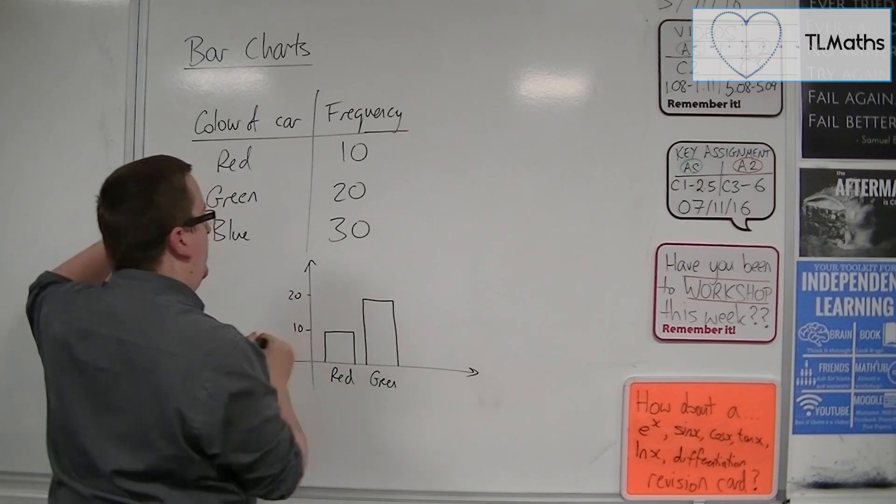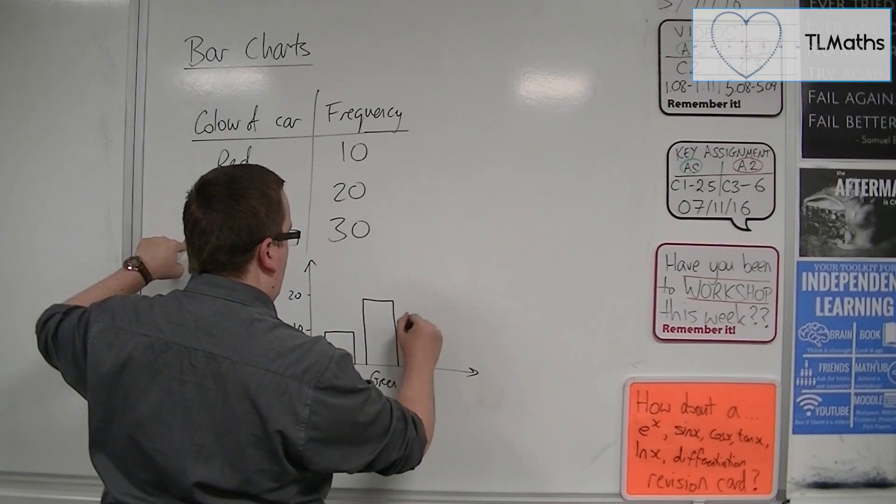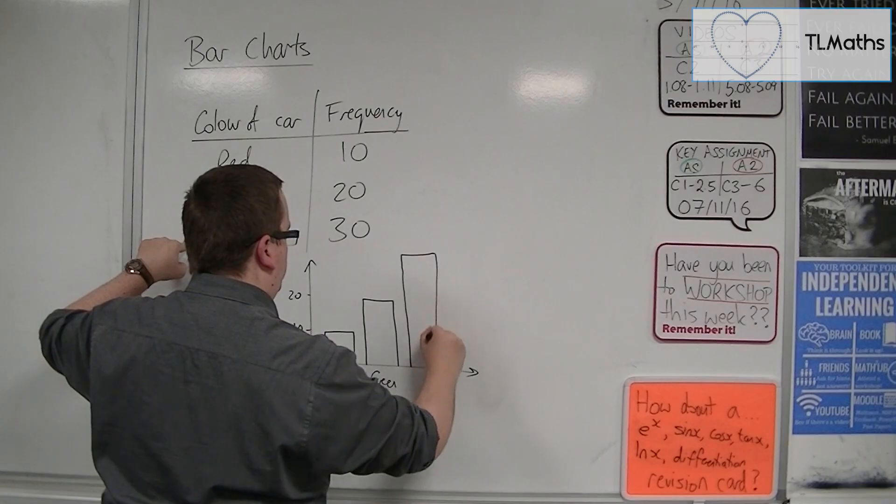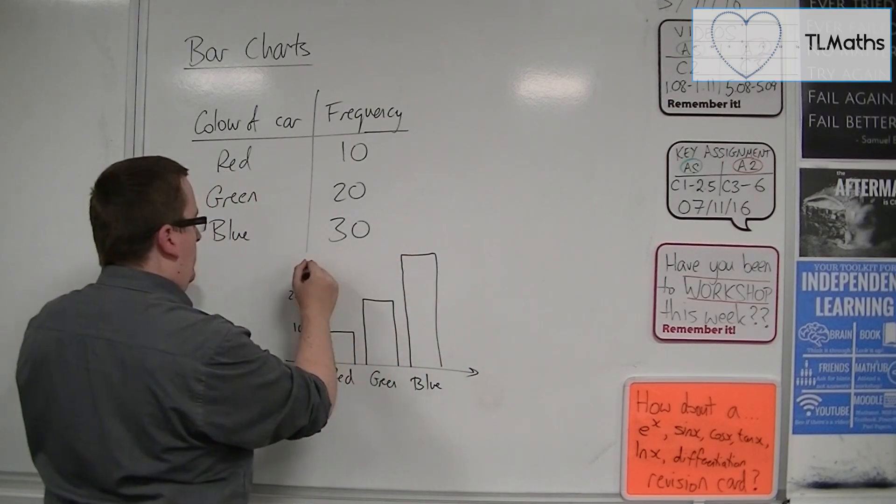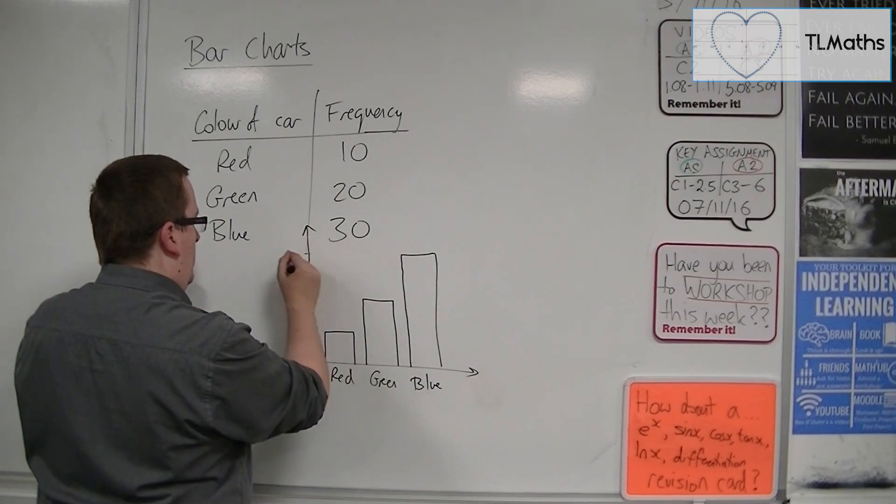So each of these bars should be the same width. And then up to 30 for blue. So let's just draw my axes a little higher. And there's 30.